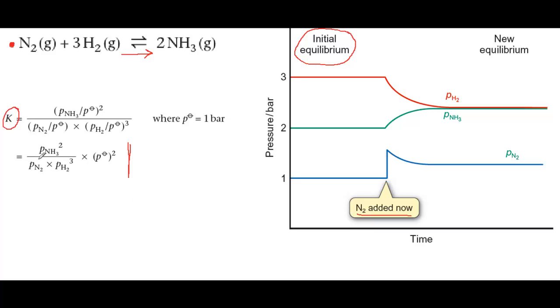Now if you add nitrogen, N2, its partial pressure, PN2, will increase. To keep the value of K constant, PNH3, the partial pressure of ammonia, must also increase to make the top of the expression larger to balance the larger PN2 on the bottom. So the reaction moves to the right to make more NH3.